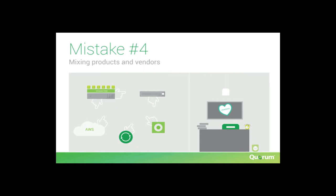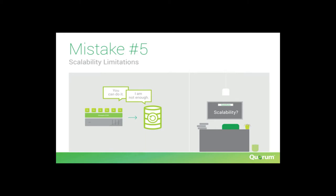Mistake number five: scalability limitations. If you are working with a backup vendor and they don't ask you what your growth plan is, you're working with the wrong vendor. If they don't expect your data to grow and don't build a solution that will last five years, you're working with the wrong vendor. If they don't ask about your daily change rate and don't have tools to show your growth pattern, you're working with the wrong vendor. You don't want to invest in year one and come back at year one-and-a-half to find you're out of space and can't back up anything anymore.